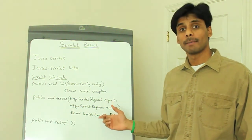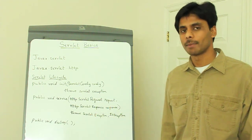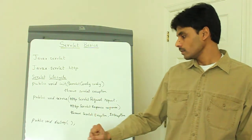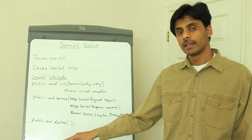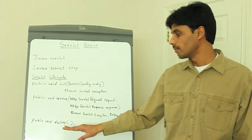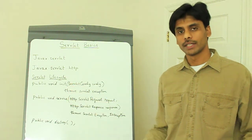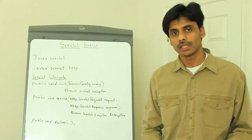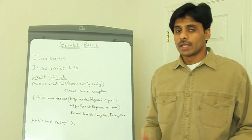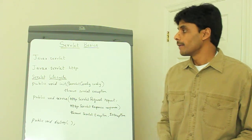At the end of the service method, you use the response class to write the response back to the browser — this could be HTML, plain text, or a file. And in the destroy method, you do the opposite of what init did: you close the database connections and any I/O file streams you have opened.